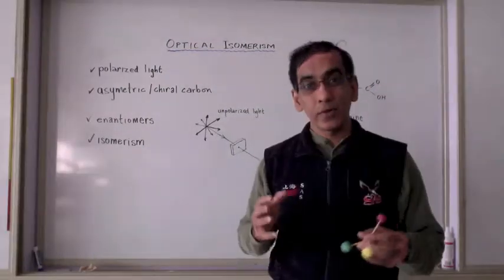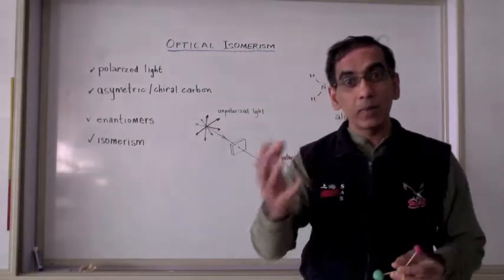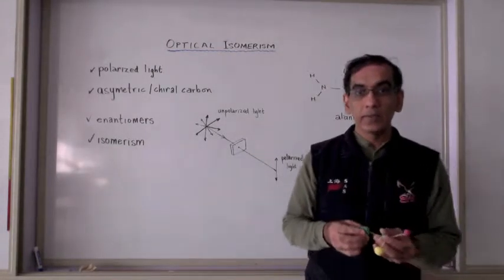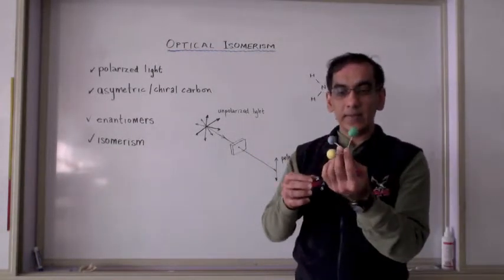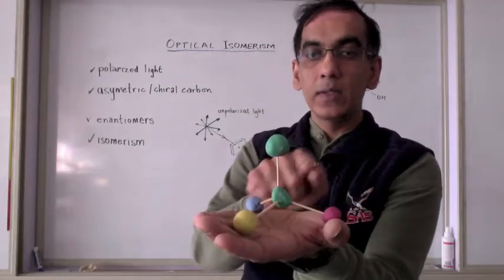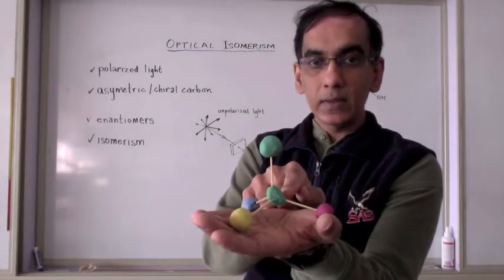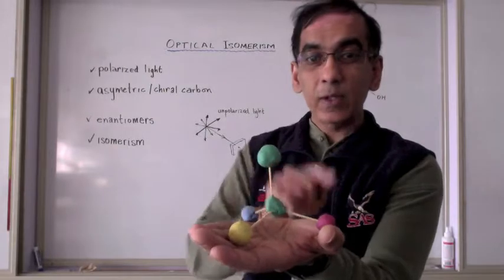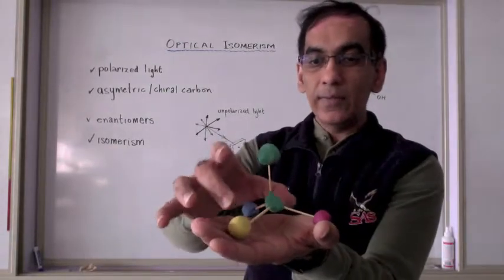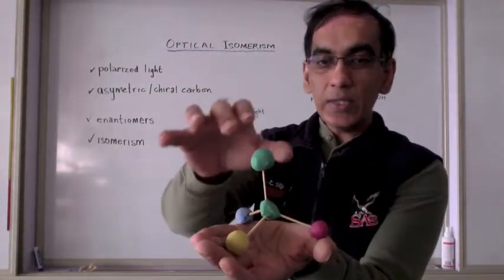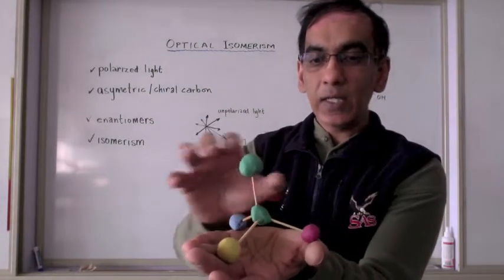Of course, if you happen to have a molecular model set, then that would be perfect for building a model like this. In this model, the ball in the middle represents a carbon atom and the four bonds placed strategically at the tips of a tetrahedron.